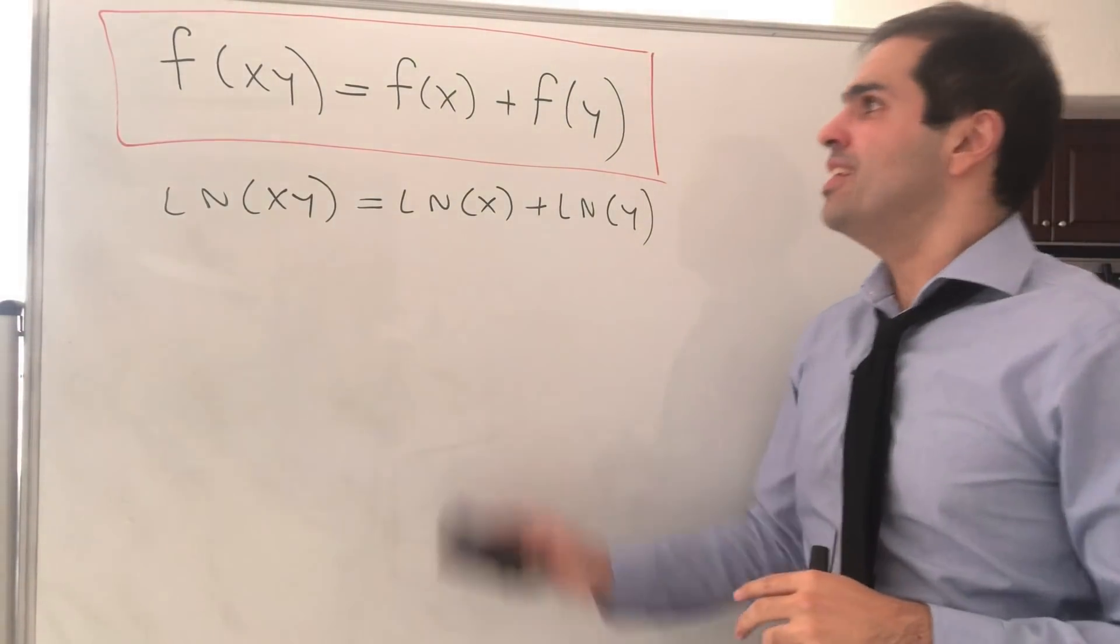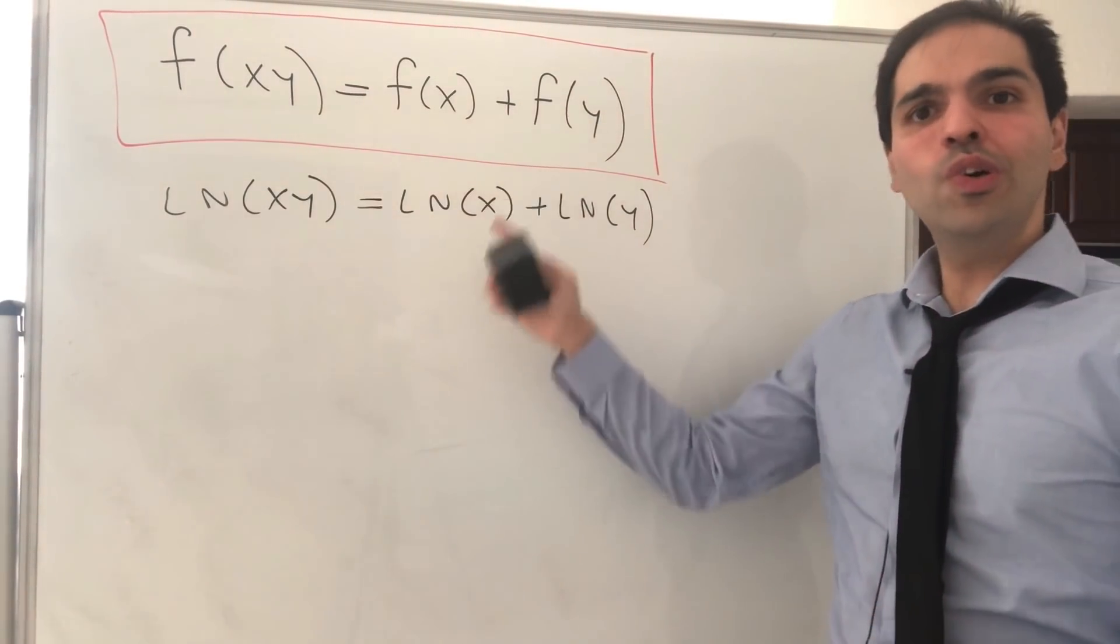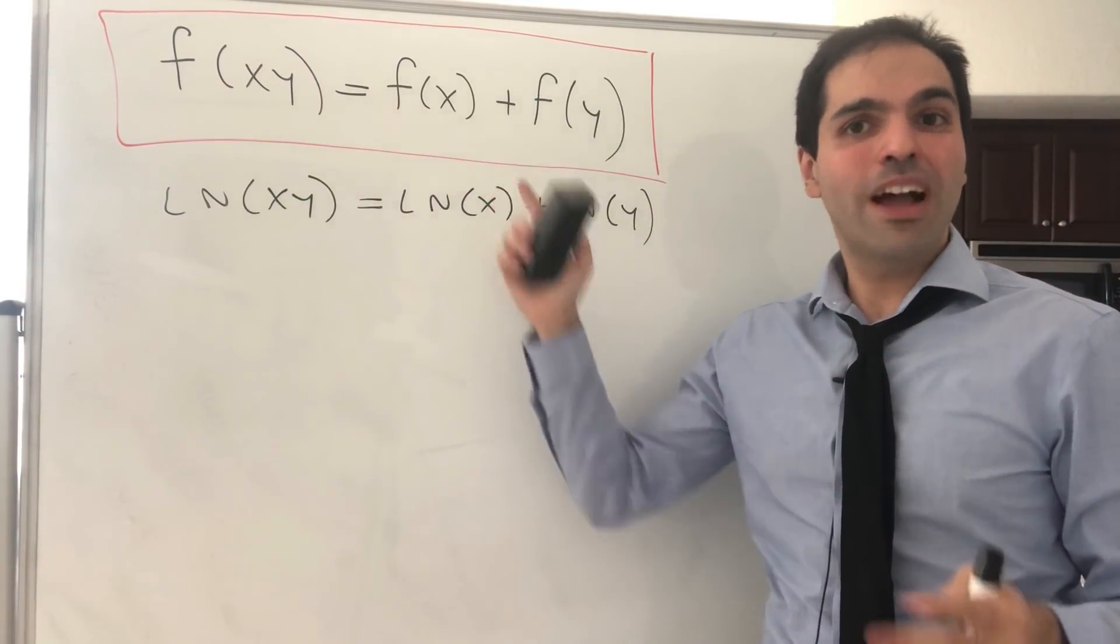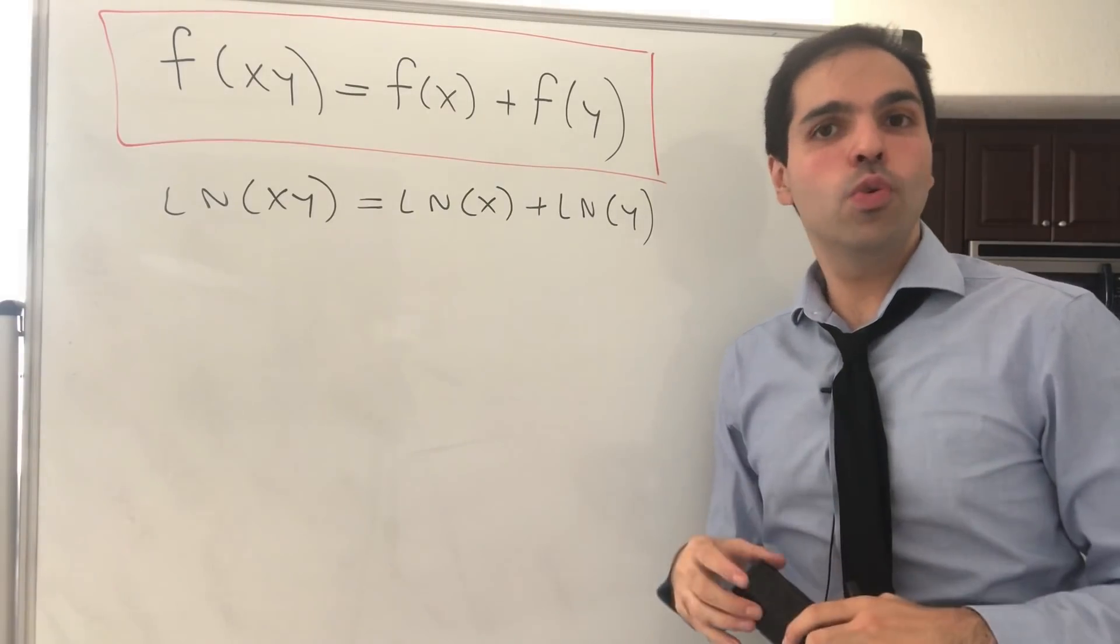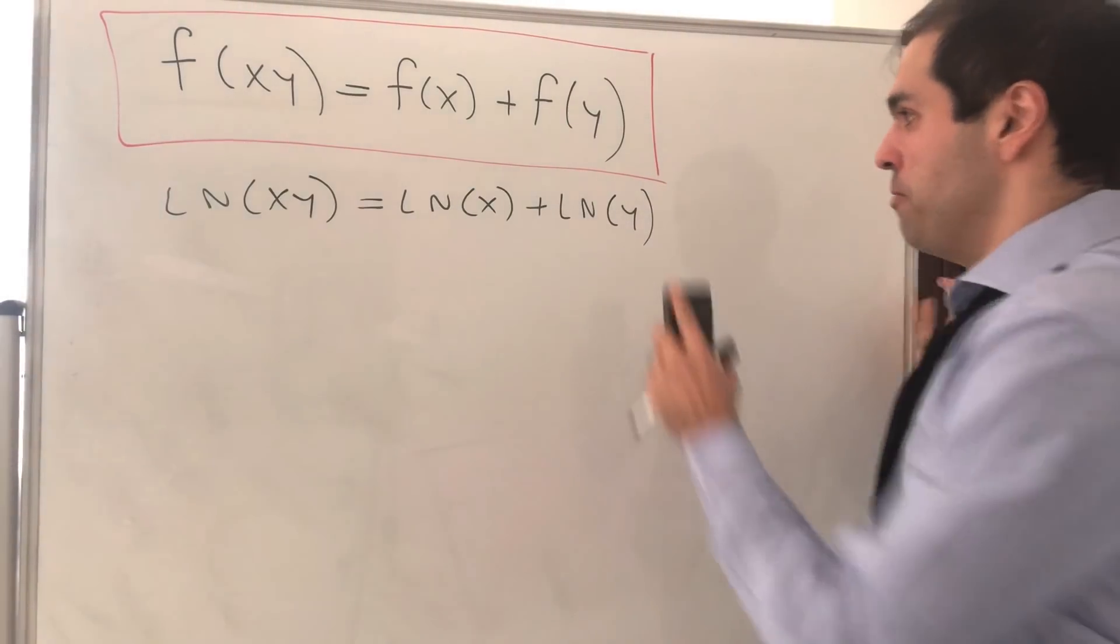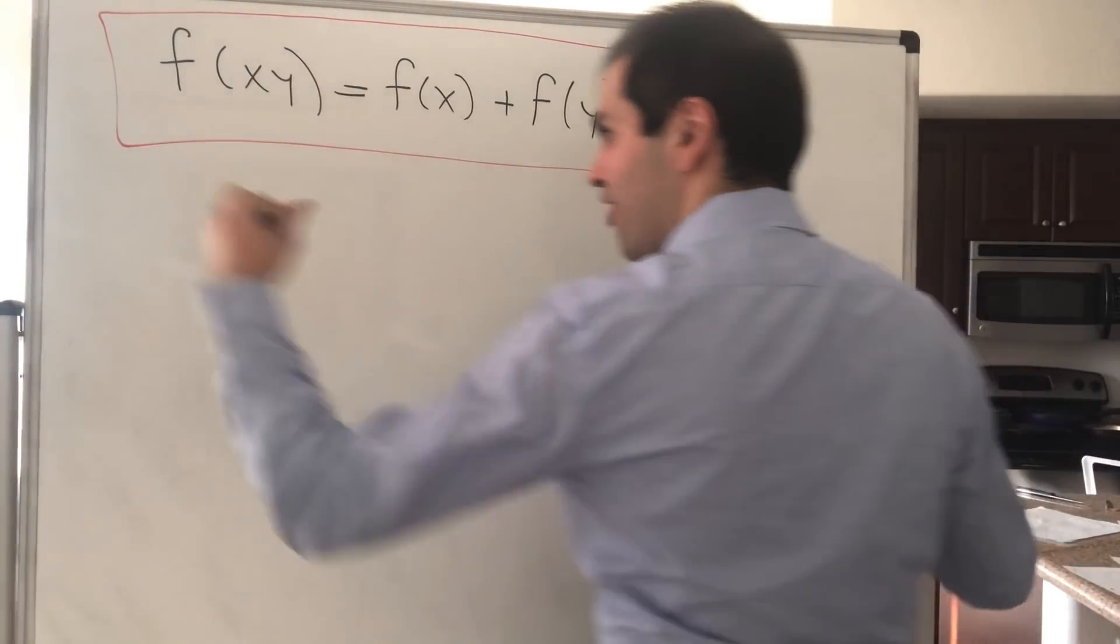And why is that? Basically what we'll do, we'll choose a clever function g that transforms this problem into one that we already know. Namely, consider the following function: g of x equals f of e to the x.